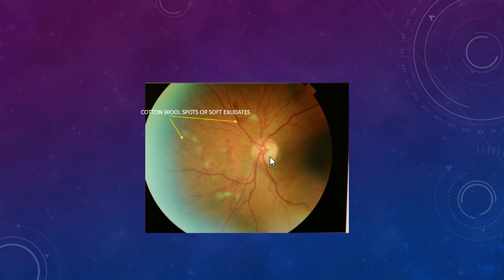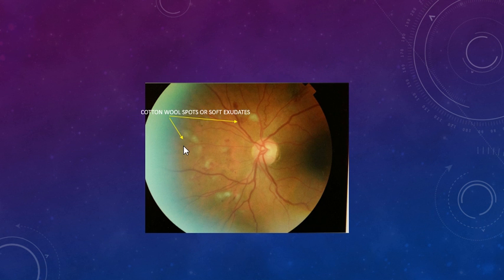This is an image of the left eye showing multiple cotton wool spots, or soft exudates. These represent ischemia of the nerve fiber layer — they are relatively large, look like cotton, have ill-defined margins, and generally tend to disappear in about three to six months. There are some retinal hemorrhages as well. The disc looks fine and the blood vessels look a little dilated and tortuous, but there is no major abnormality at the disc.